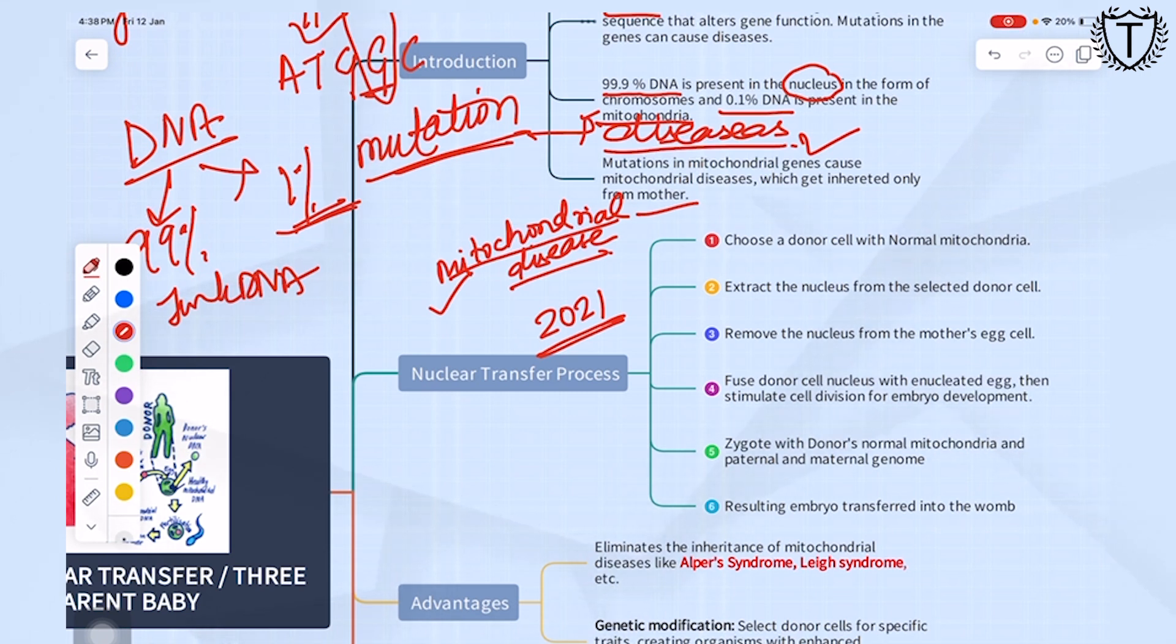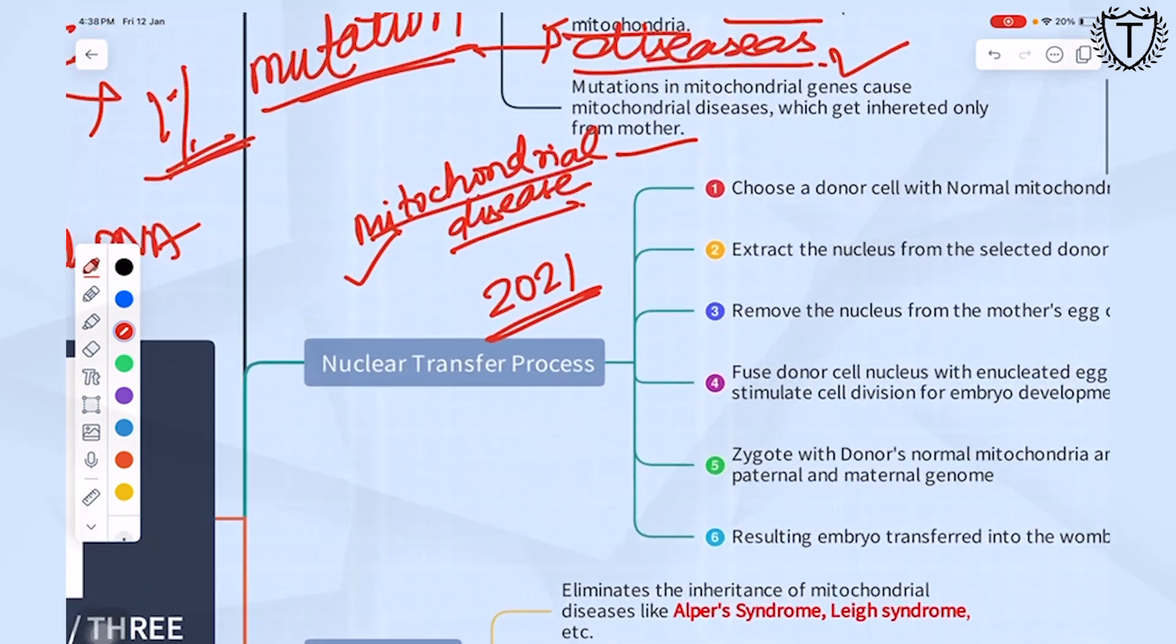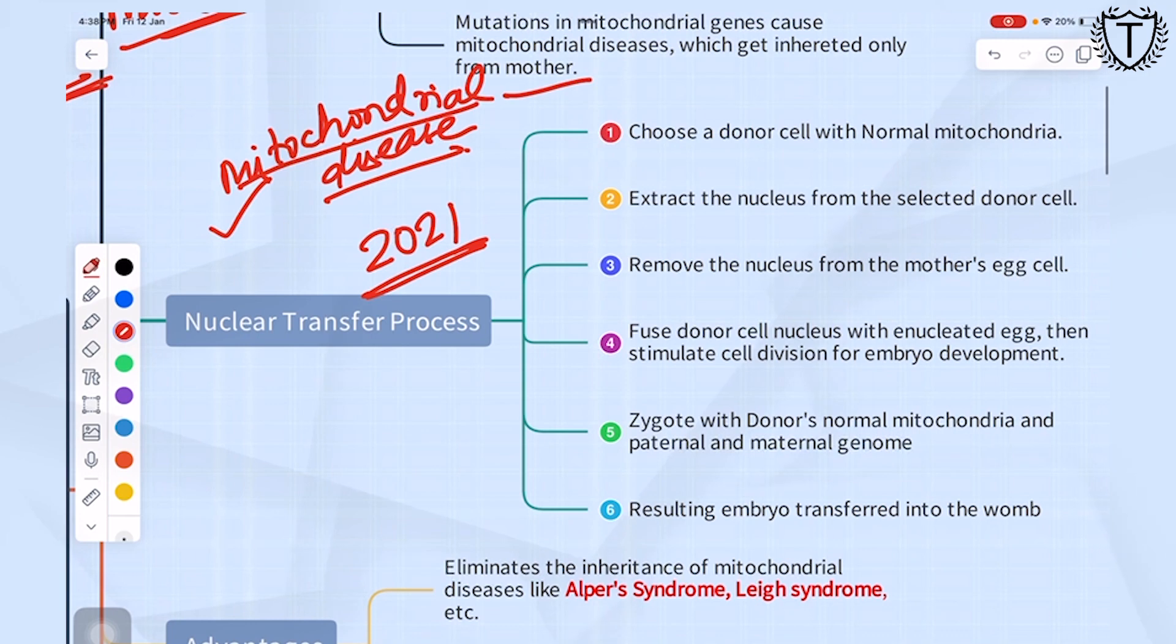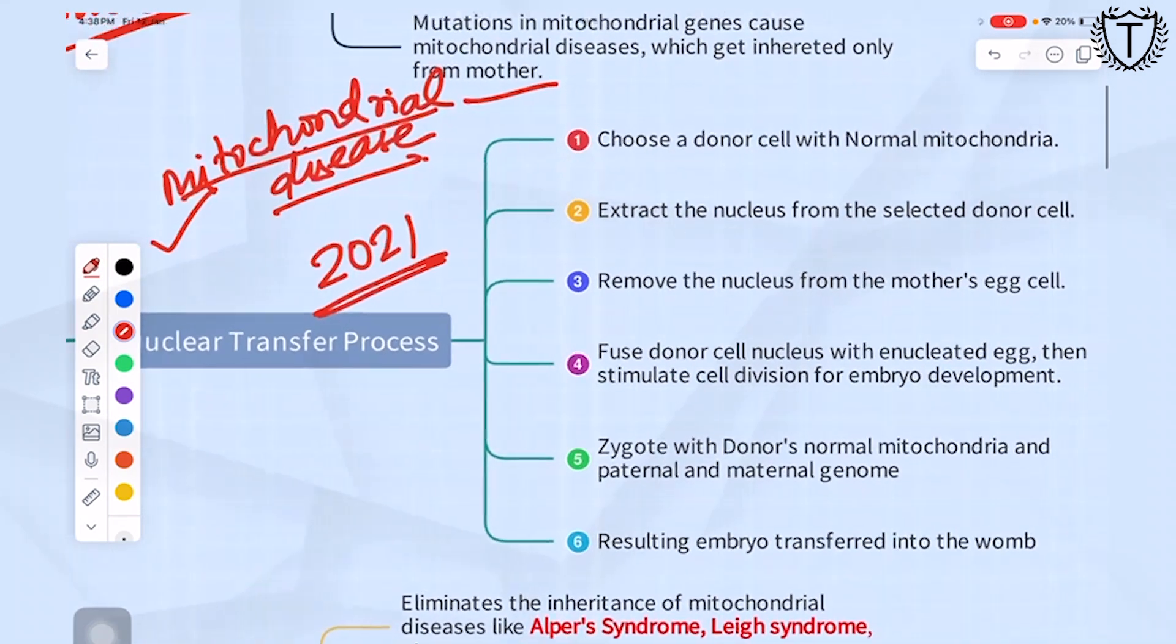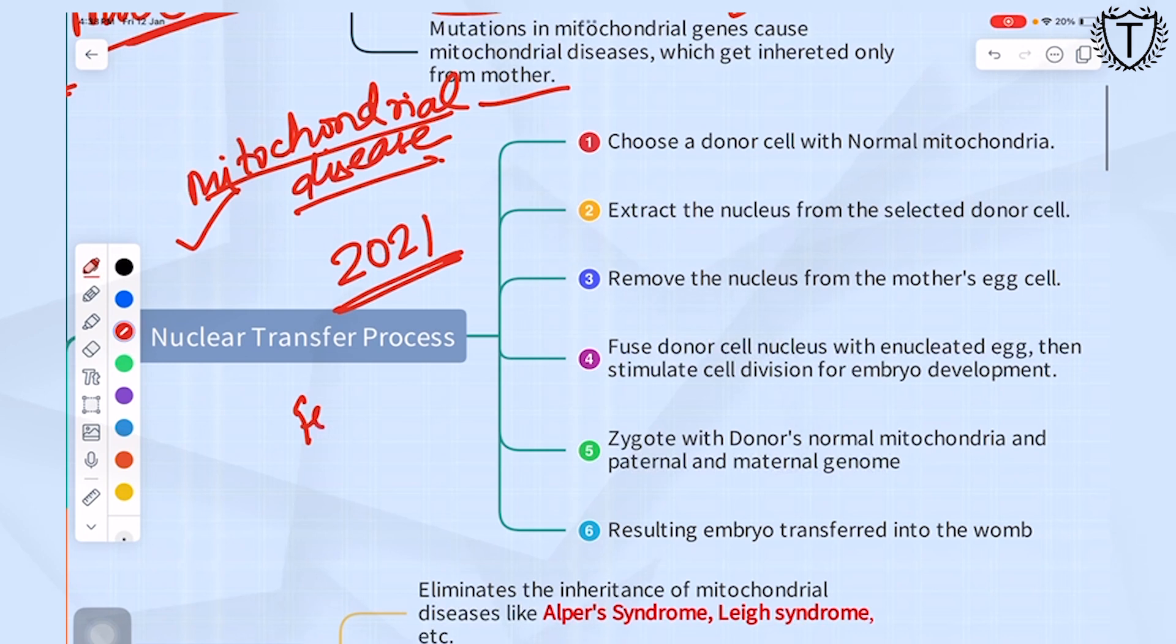In order to avoid these diseases, there is a treatment called mitochondrial replacement therapy. First of all, we have to find a female who has a healthy mitochondria, a female who has an egg with a nucleus with a healthy mitochondria.